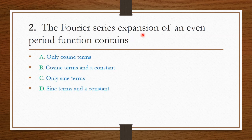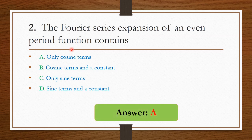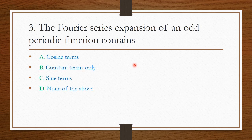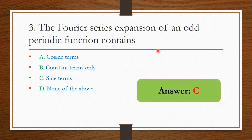The Fourier series expansion of an even function contains — normally an even function consists of only cosine terms, so option A is the right answer. The Fourier series expansion of an odd periodic function contains — an odd function consists of only sine terms, so option C is the right answer.